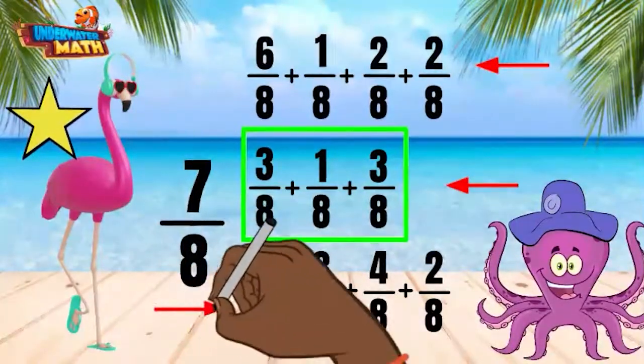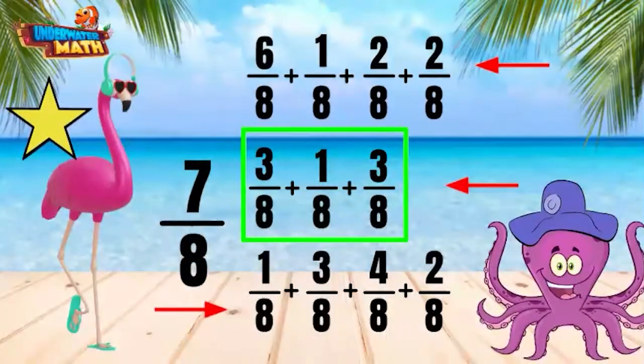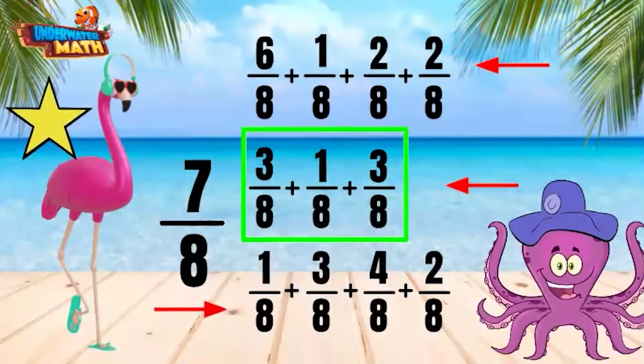Let's check the third one to see if it works. 1 plus 3 is 4, plus 4 is 8, plus 2 is 10. This expression has a sum of 10/8 and is incorrect.